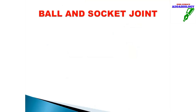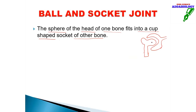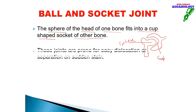The first synovial joint is the ball and socket joint. One bone acts like a ball and the other acts like a socket. The sphere of the head of one bone fits into the cup-shaped socket of the other bone. These joints are prone to easy dislocation — they can be easily separated or broken under accident or sudden strain.